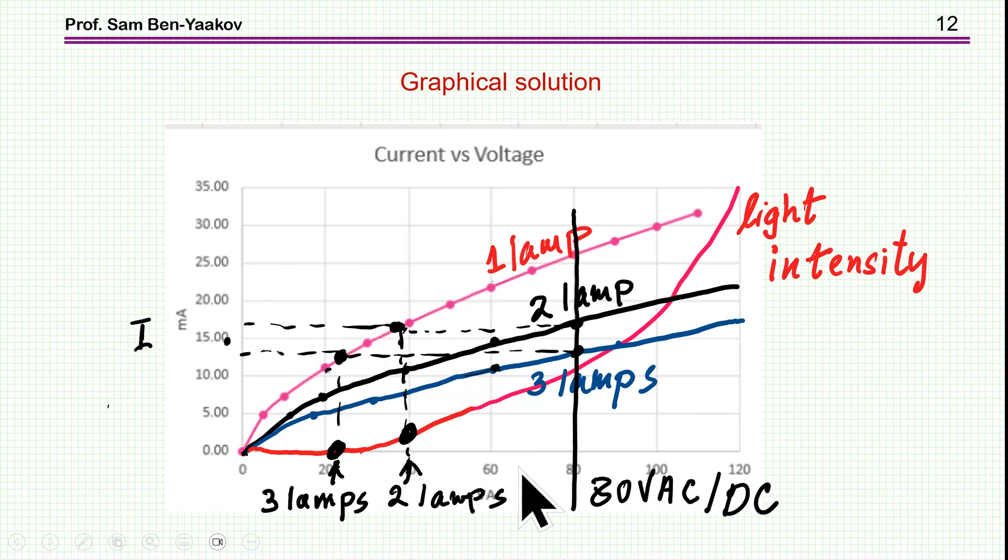And then I move to a case of 80 volts. In this case, you see that, well, everything is the same, the current. I can find the voltage on the lamps. And in this case, we see that for two lamps, we see some light, while with three lamps, there's no light. So even though there is a voltage feeding the three lamps, practically, you don't see any light intensity coming out.